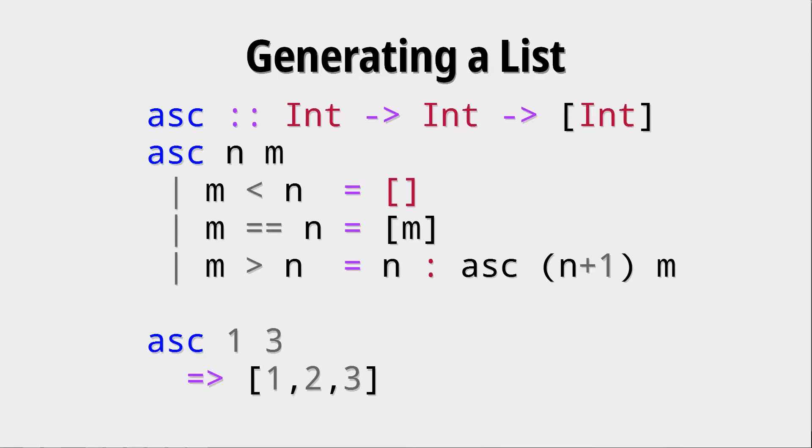We could write this as m colon empty list, but we don't have to. In general, we can write a list like this if the amount of elements in it is finite. If m is bigger than n, we recursively construct the new list by prepending n and then doing the recursive call with an incremented n. Our hope is that n at some point will hit the value of m, at which case we return the last list and then we are finished.